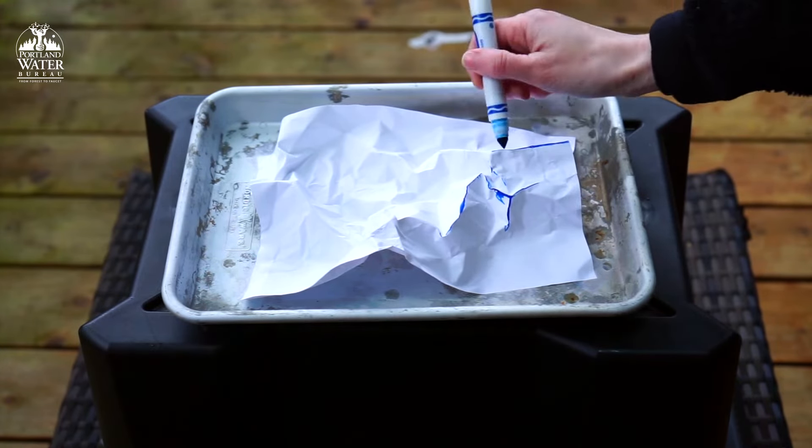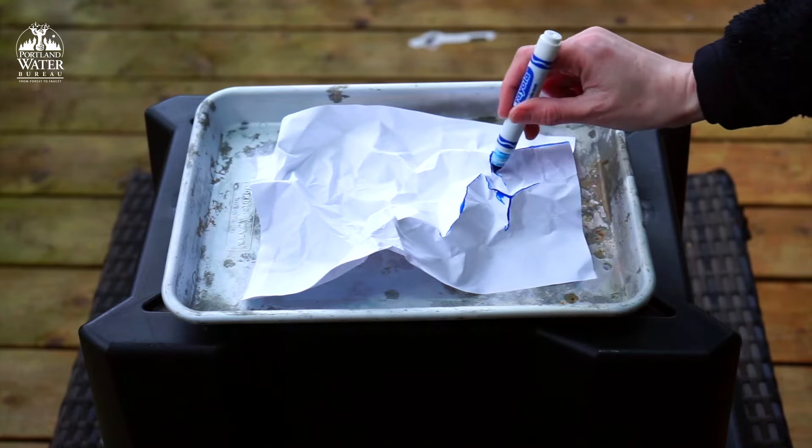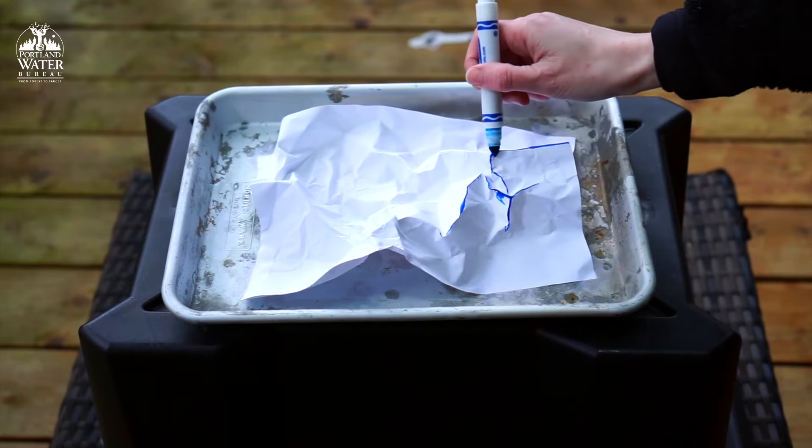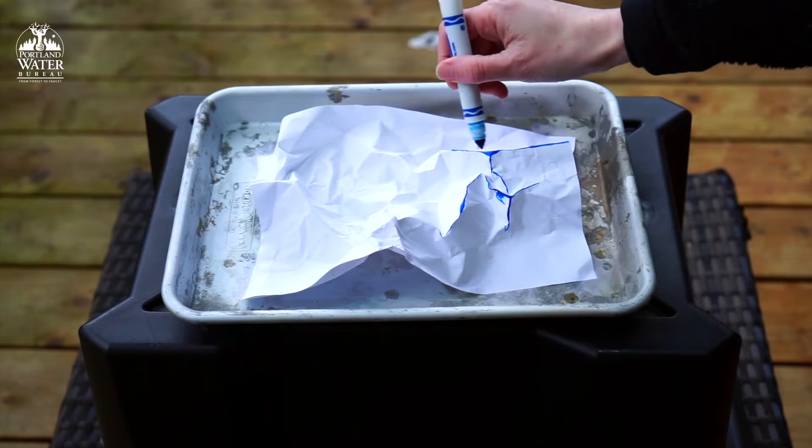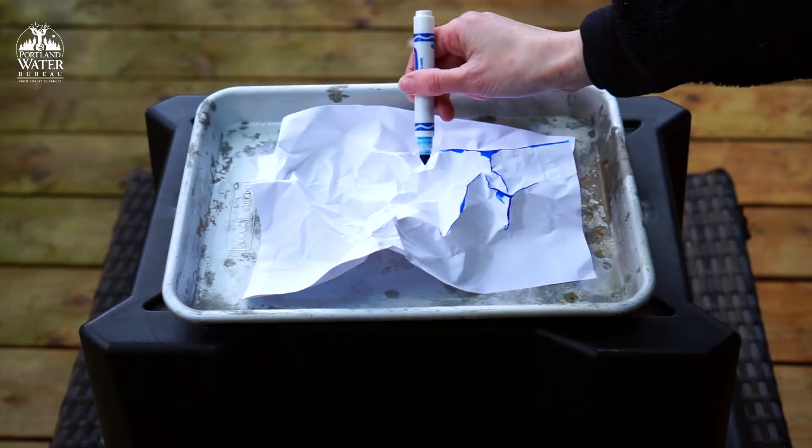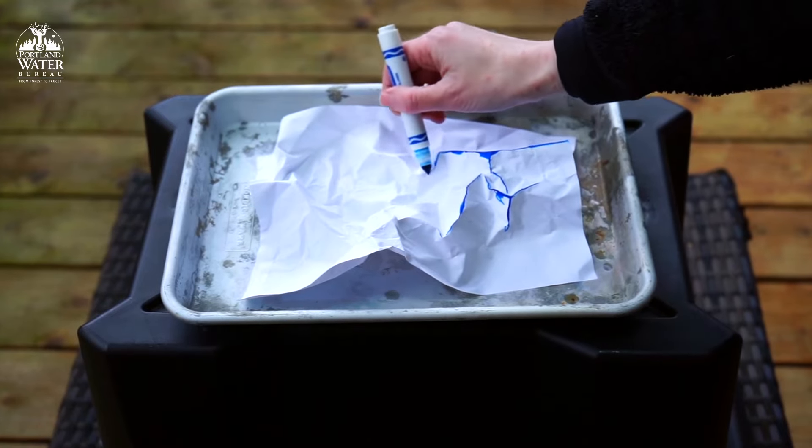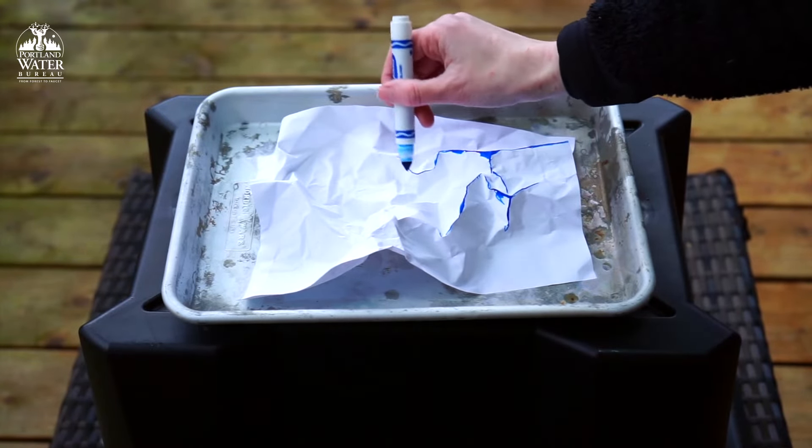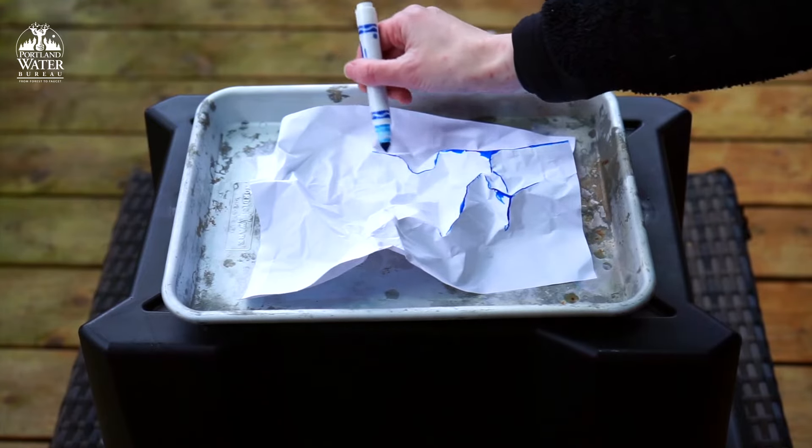The end goal is that this blue ink, once it gets wet, is going to run down. And we will be able to see the direction of flow that our water is going to take once we have a rainstorm. So I will be back after I finish tracing mine.